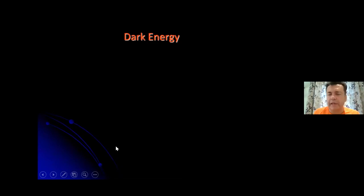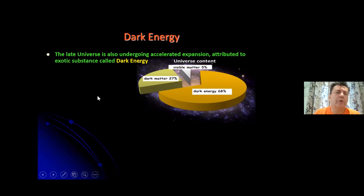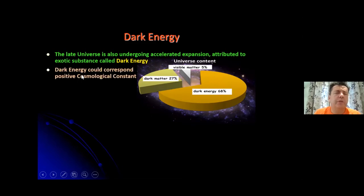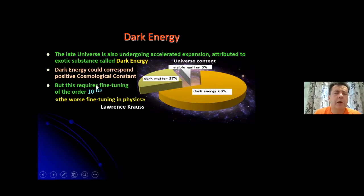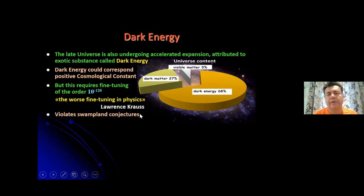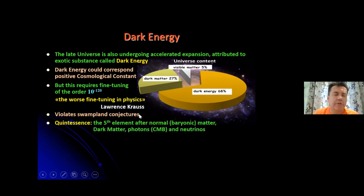Enough about inflation — let's talk about dark energy. Observations suggest that the late universe is also undergoing accelerated expansion, attributed to an exotic substance called dark energy, which makes up almost 70% of the present universe content. This dark energy could correspond to a positive cosmological constant, but that would require an incredible fine-tuning of order 10^{-120} — called the worst fine-tuning in physics. It also violates the Swampland conjectures, which suggest there are no de Sitter vacua with a UV completion. This has motivated many alternative proposals.